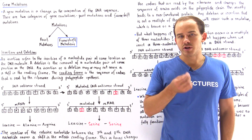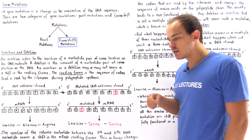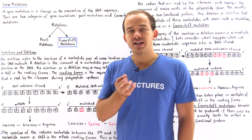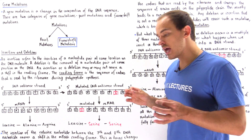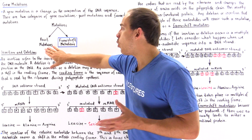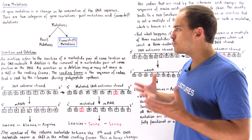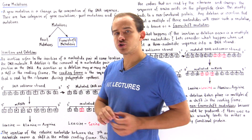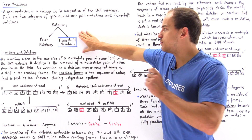Previously, we defined what a gene mutation was. We said that a gene mutation is basically a change in the nucleotide sequence of our DNA molecule other than genetic recombination. We said that there are two types of gene mutations: point mutations, also known as base pair substitutions or base pair mutations, which was the focus of the previous lecture. In this lecture, we're going to focus on frameshift mutations.